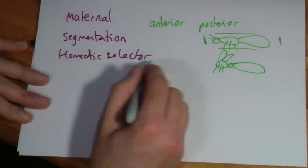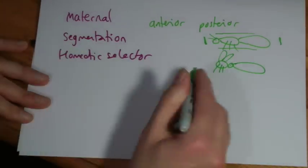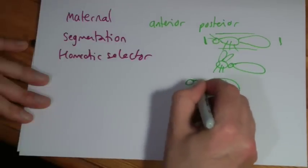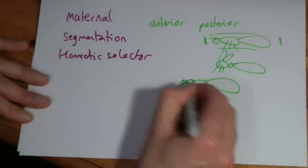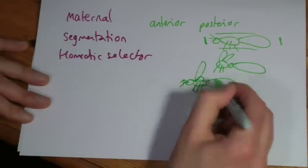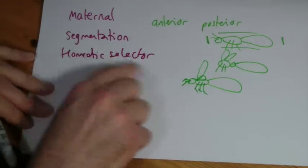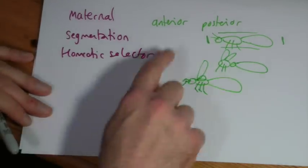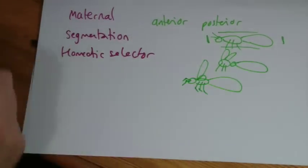The homeotic selector determines what each section does, and this is the classic one with Drosophila, where we make legs start growing out of the head rather than the antenna - the antennapedia. So messing around with these homeobox, particularly the homeotic selectors, is the ones that tend to start putting things in the wrong place.